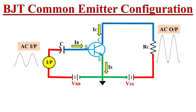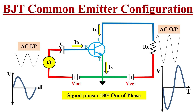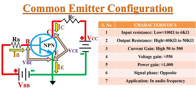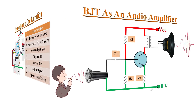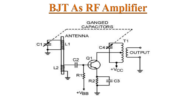One more important property: the output voltage waveform is 180 degrees out of phase with the input voltage waveform, meaning the output signal is inverted compared to the input. These are the basic properties of the common emitter configuration, which we will discuss thoroughly in an upcoming video. In terms of applications, the common emitter configuration is widely used in audio amplifier circuits for signal amplification, and also widely used in radio frequency circuits.